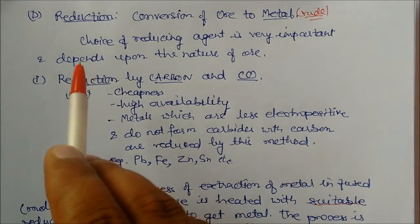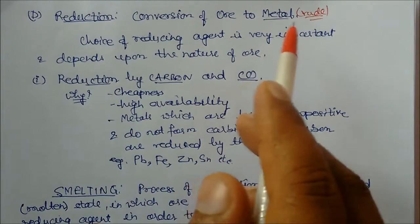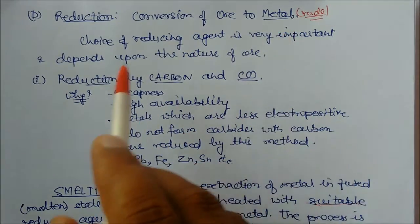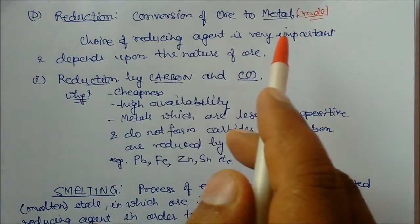Now we will see the next process called reduction, in which roasted or calcined ore is converted into crude metal. In this process, choice of reducing agent is very important.